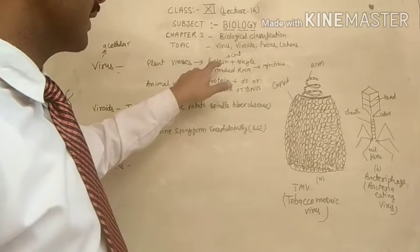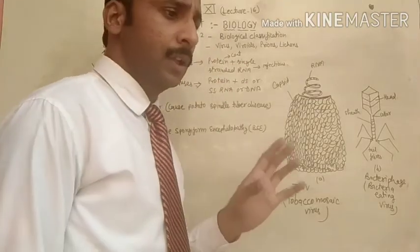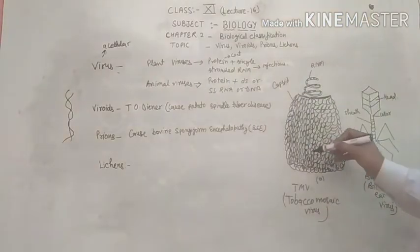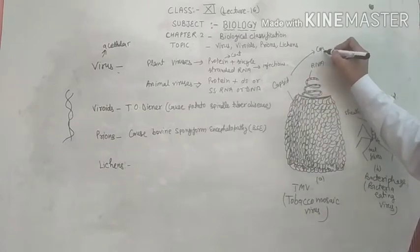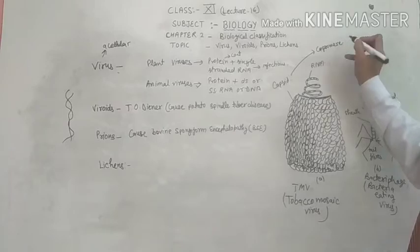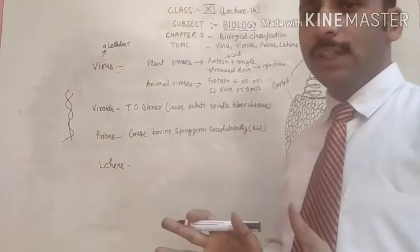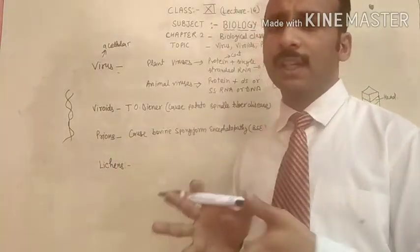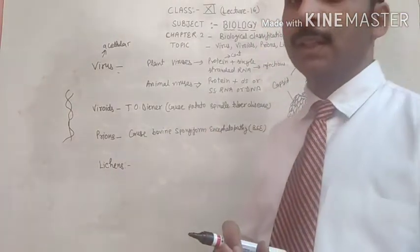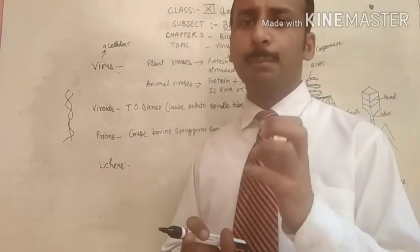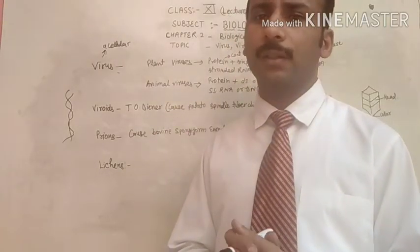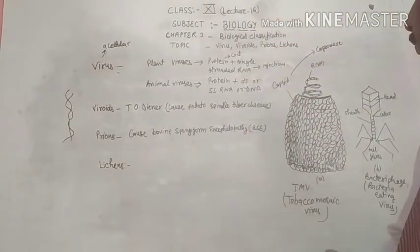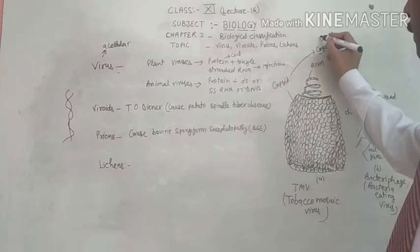In plant viruses, mostly it is protein plus single-stranded RNA. The outer covering of the virus which is made up of protein is called the capsid, and the unit of the capsid is the capsomere. The protein present outside the RNA forms the outer covering of the DNA or RNA, and that is called the capsid. The unit of the capsid is called the capsomere.